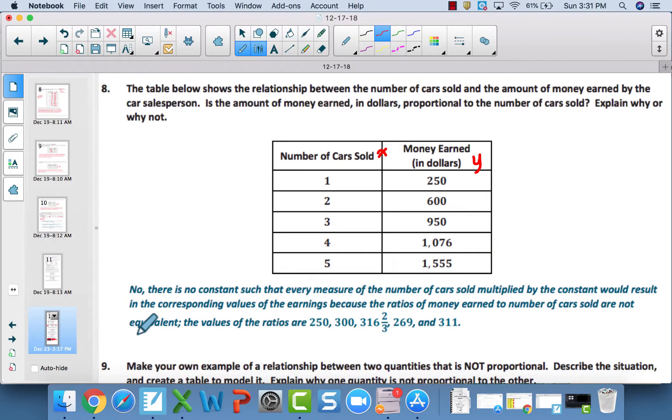Moving on to number 8. Eight is also not proportional because that constant of proportionality is not consistent. This first ratio 1 to 250, that's a unit rate, it has a constant of proportionality of 250. But then the second one you multiply by 300. That's not equivalent to 250. And you'll get these other multiplicative numbers which you just get by dividing and you notice they're not the same. And keep in mind they're all different but if even one is different, the table's not proportional. So there is no way number 8, the number of cars sold to the money earned is proportional.